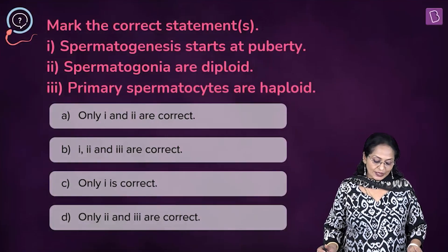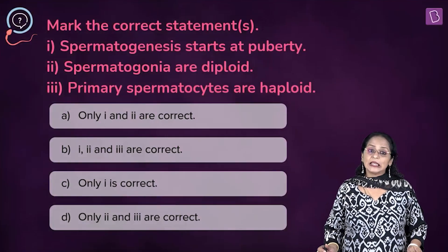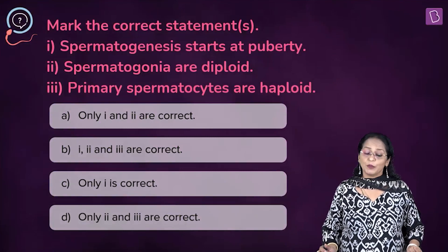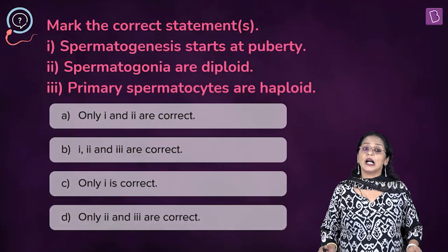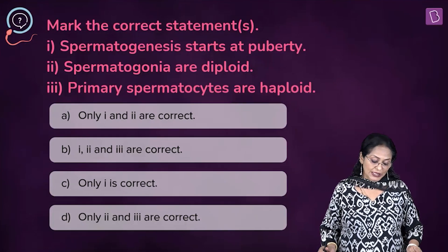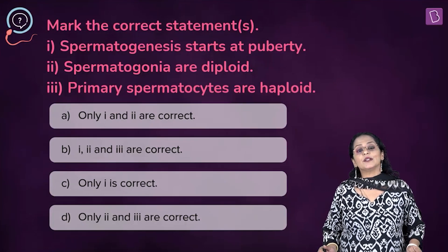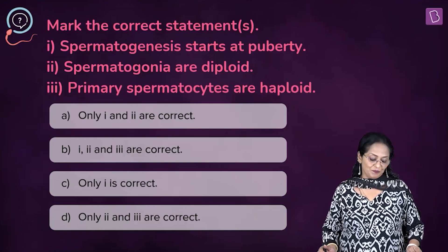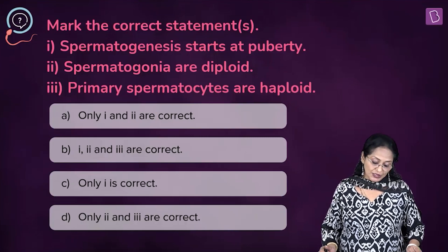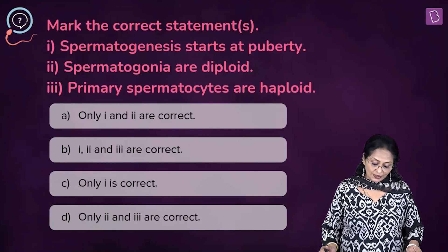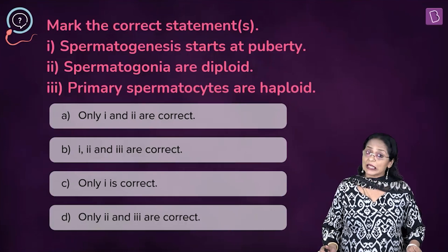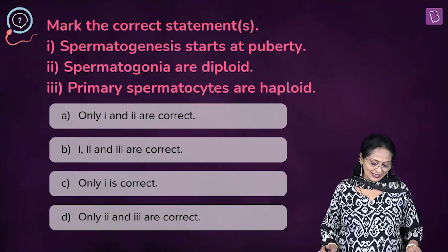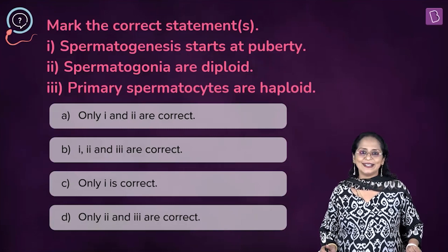Let's look at a new question: Mark the correct statements. 1) Spermatogenesis starts at puberty. 2) Spermatogonia are diploid. 3) Primary spermatocytes are haploid. Option A says 1 and 2 are correct. B says 1, 2 and 3 are correct. C says only 1 is correct. D says only 2 and 3 are correct.